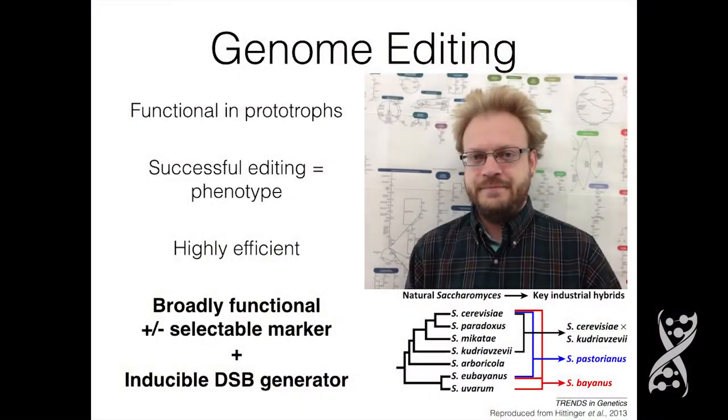In 2011, I started my post-doc with Chris Hittinger at the University of Wisconsin. Many of the questions we were asking relied on working with wild strains of Saccharomyces yeast — not just cerevisiae, but other species of the Saccharomyces genus. All of these were prototrophs. So we wanted a genome editing tool that was like URA3, but we didn't want to make prototrophs auxotrophic because that can be difficult with some of these species and time-consuming for very little reward.